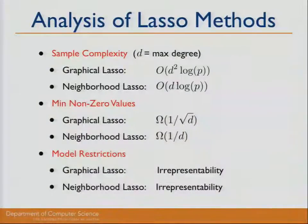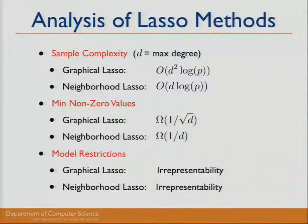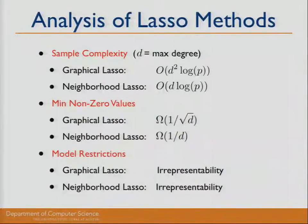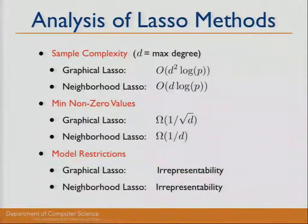Looking at the analysis of the lasso methods: sample complexity refers to the number of samples sufficient to learn the structure with high probability. The graphical lasso requires order D-squared log P samples, while neighborhood lasso improves on this with a bound of D log P. Min non-zero values refers to the minimum allowed values on the off-diagonal entries in the inverse covariance matrix. Neighborhood lasso somewhat improves upon G lasso in this regard as well.